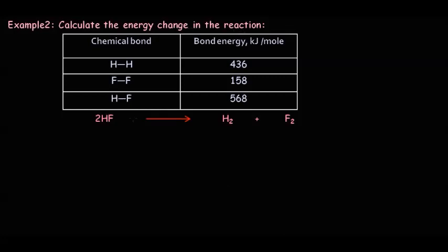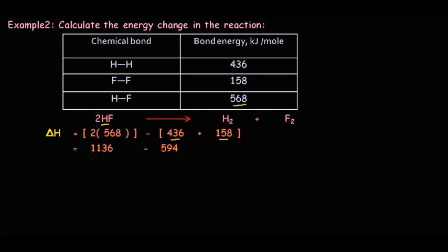For the second example, the reaction is decomposition of hydrogen fluoride: 2HF → H₂ + F₂. Bond energies given: H–F = 568 kJ/mol, H–H = 436 kJ/mol, F–F = 158 kJ/mol. ΔH = [2 × 568] − [436 + 158] = 1136 − 594 = +542 kJ/mol. This positive value indicates that this is an endothermic reaction where 542 kJ/mol of energy is absorbed.